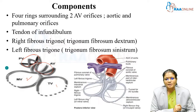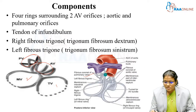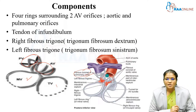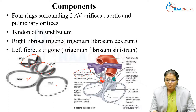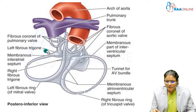The fibrous skeleton is also made up of the tendon of infundibulum, which is present between the pulmonary valve and the aortic valve. There is also a right fibrous trigone and a left fibrous trigone. So the components include four rings encircling the aortic, pulmonary, tricuspid, and mitral orifices. The tendon of infundibulum extends between the pulmonary orifice and the aortic orifice.